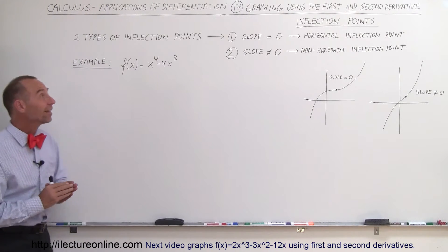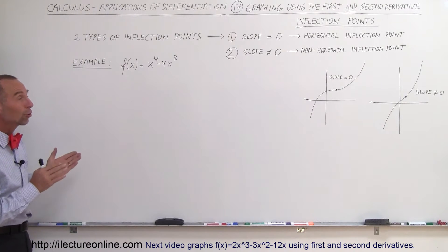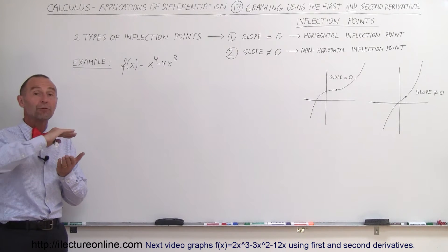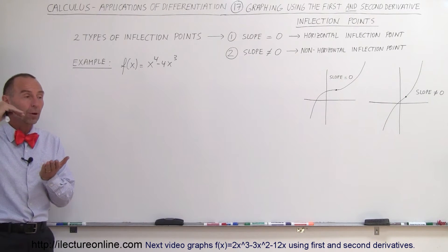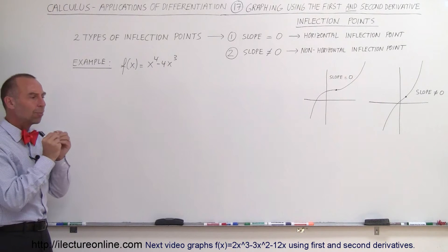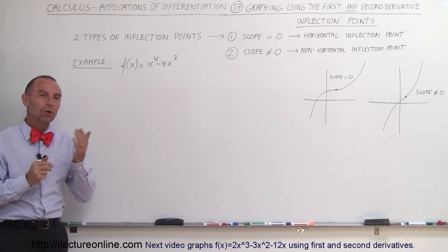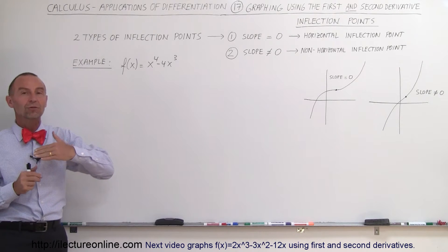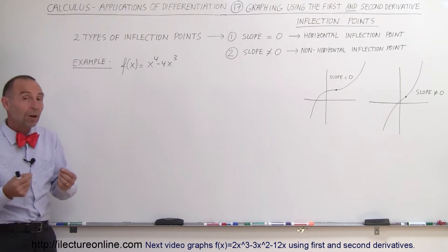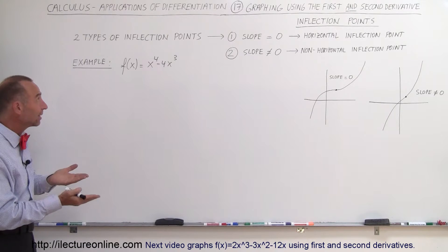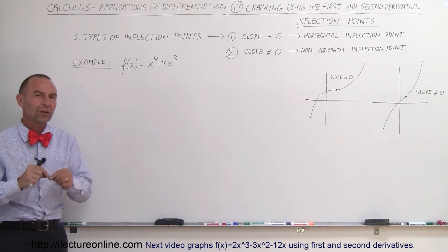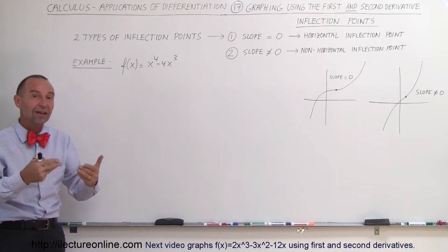Welcome to iLecture Online. Let's take a closer look at inflection points. Inflection points are the points where we go from concave down to concave up or concave up to concave down — that's where the slope goes from increasing to decreasing or decreasing to increasing. The way we find those inflection points is by taking the second derivative, setting it equal to zero, and solving for the values of x that satisfy that equation.